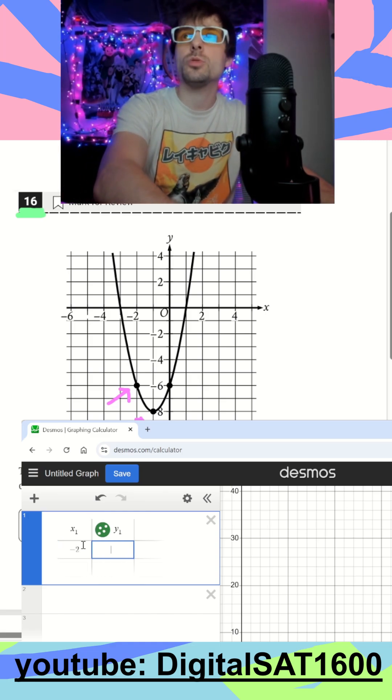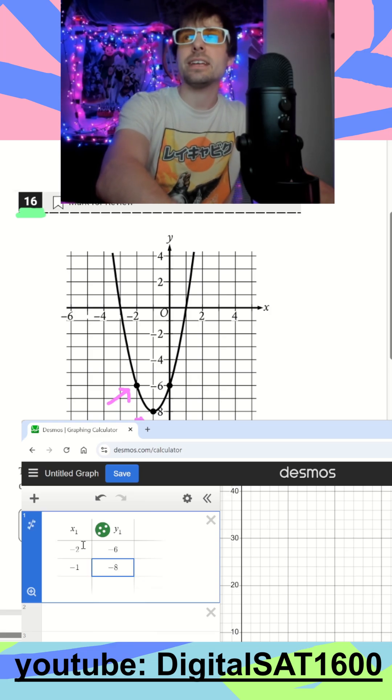That looks like it's going to be negative 2, negative 6, and then in the middle there, negative 1, negative 8, and finally, a 0 for our x, and a negative 6.